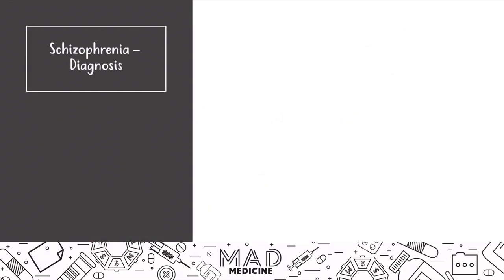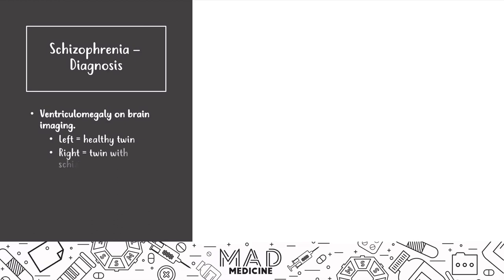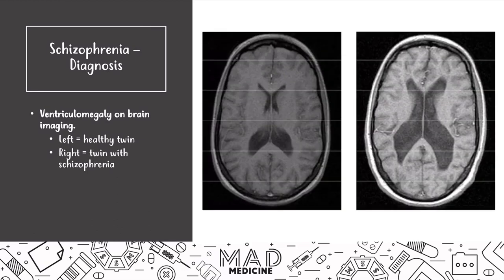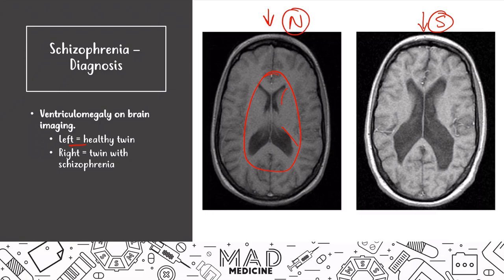The ventricles are the parts of your brain seen on CT scans. Twin studies have compared healthy and schizophrenic twin brains. On the left you have a healthy twin where the lateral ventricles are normal in size and shape, and on the right you have a schizophrenic patient where the lateral ventricles are abnormally large. Ventriculomegaly is a hallmark finding seen in schizophrenic patients.